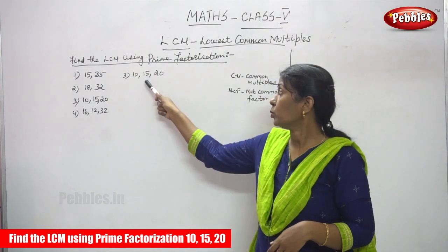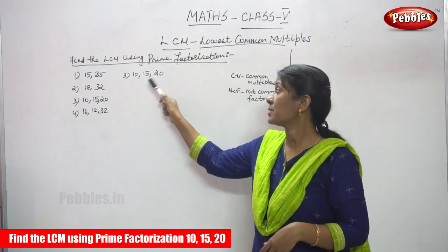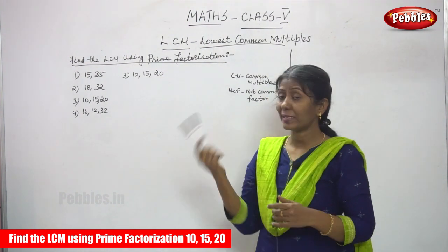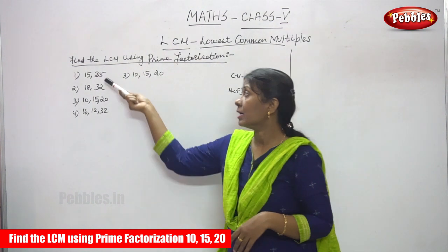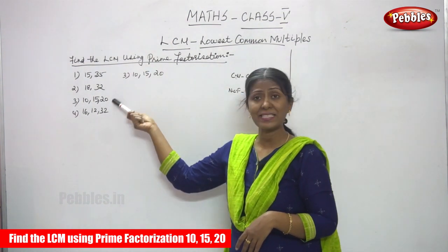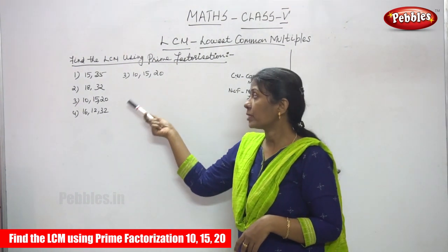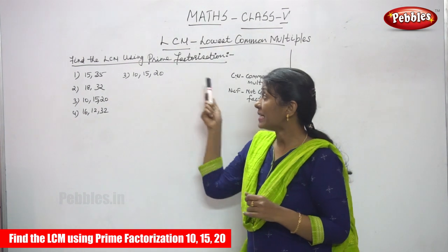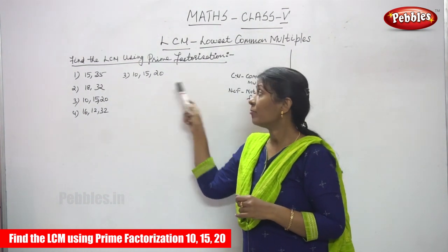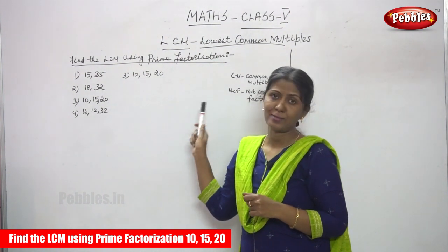Now we are going to do LCM for three numbers: 10, 15, and 20. Before this, we have seen how to find LCM only for two numbers, that is 15 and 35, and 18 and 32. Now we are going to do the LCM using the prime factorization method for three numbers. The question is 10, 15, and 20.